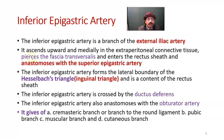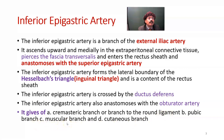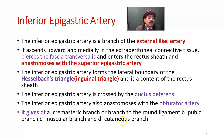The branches of the inferior epigastric artery include: a cremasteric branch in males, a branch to the round ligament in females, a pubic branch, and muscular branches. The muscular branches supply the rectus abdominis muscle, similar to the superior epigastric artery. It also supplies the pyramidal muscle, and it has cutaneous branches.